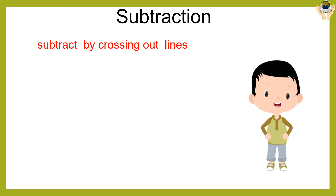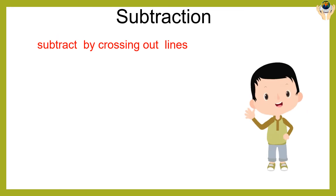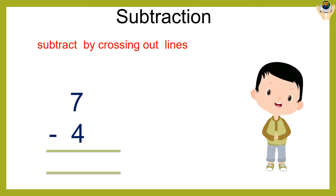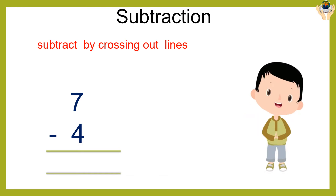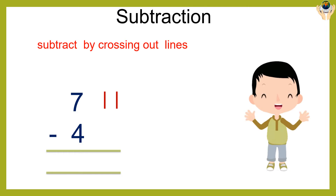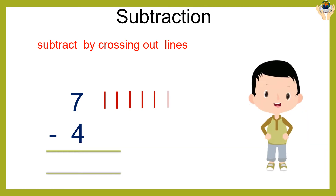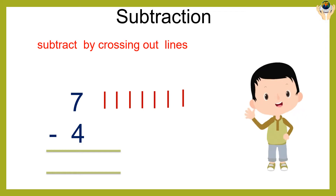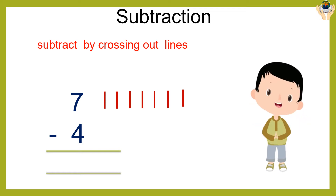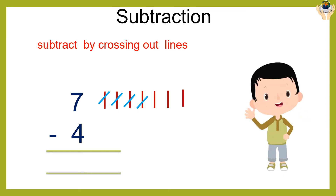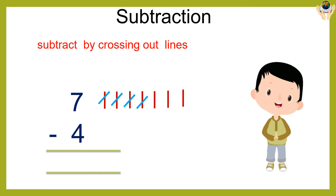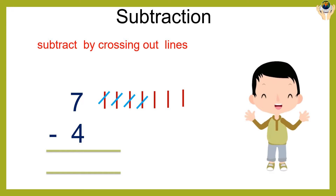Now we are going to subtract by crossing out lines. Seven minus four is equal to what? Draw seven lines: one, two, three, four, five, six, seven. Minus four, so cross out four lines: one, two, three, four. How many lines are left? One, two, three. The answer is three.